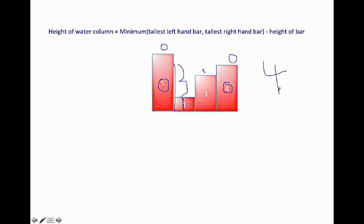So what would be the time complexity of this approach? For every column you could go about calculating the tallest left-hand side and the right-hand side. So this takes you O of N for each bar and we have N bars. So the total time complexity would be O of N square.